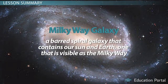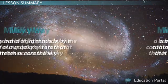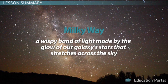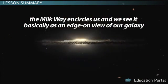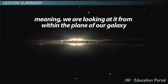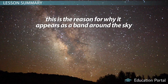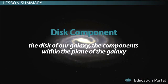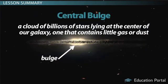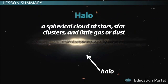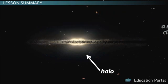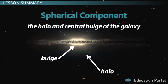Our galaxy is called the Milky Way galaxy — a barred spiral galaxy that contains our Sun and Earth, one that is visible as the Milky Way, a wispy band of light made by the glow of our galaxy's stars that stretches across the sky. The Milky Way encircles us and we see it as an edge-on view of our galaxy, meaning we are looking at it from within the plane of our galaxy. The Milky Way galaxy is made up of the disk component — the components within the plane of the galaxy — the central bulge, a cloud of billions of stars lying at the center containing little gas or dust, and the halo, a spherical cloud of stars and star clusters with little gas or dust. Together, the halo and central bulge are known as the spherical component.